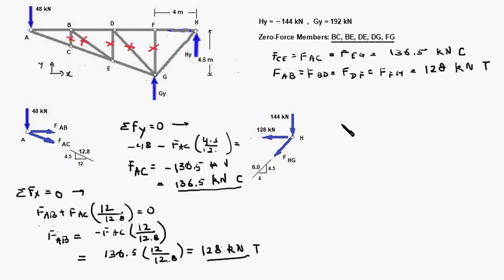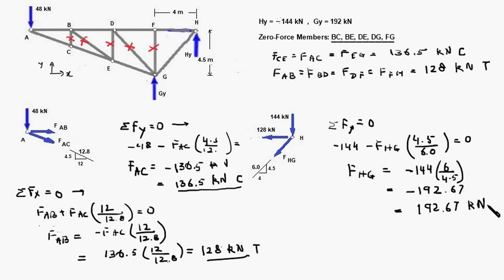And now we write the equilibrium equation in y-direction and that will be minus 144 minus FHG times 4.5 divided by 6 equal to 0 and that will give us FHG equal to minus 144 times 6 divided by 4.5 which equals minus 192.67 kilonewtons. Since the answer is a negative it means this force is 192.67 kilonewtons and compressive.